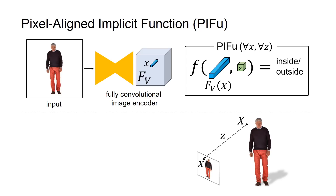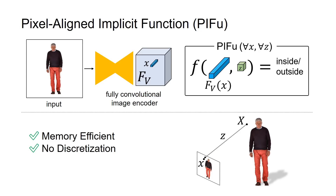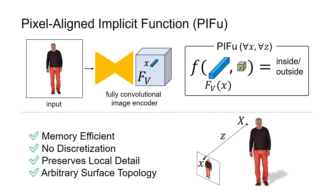PIFU is memory-efficient, requires no discretization in the 3D space, preserves local details present in the image, and supports arbitrary surface topology.